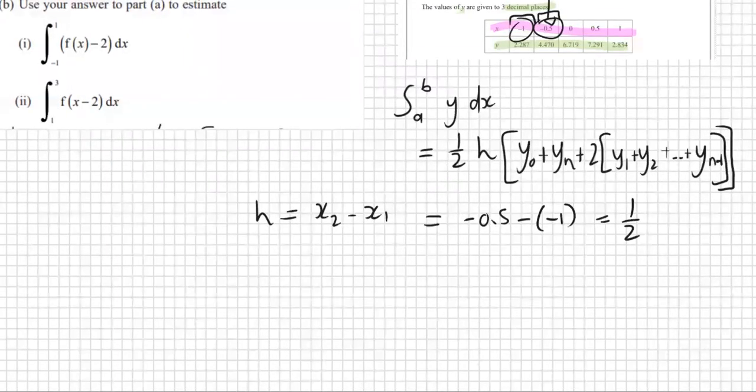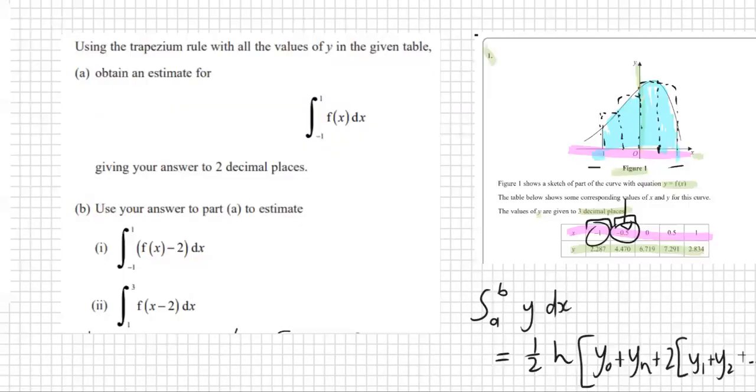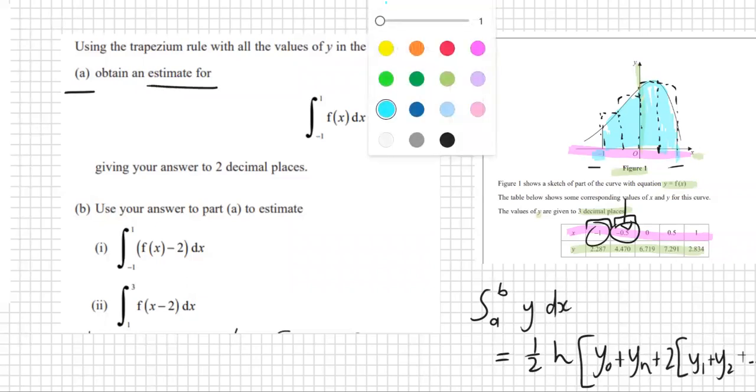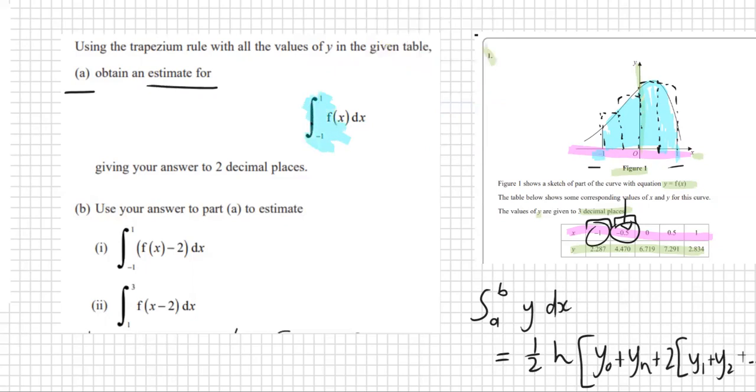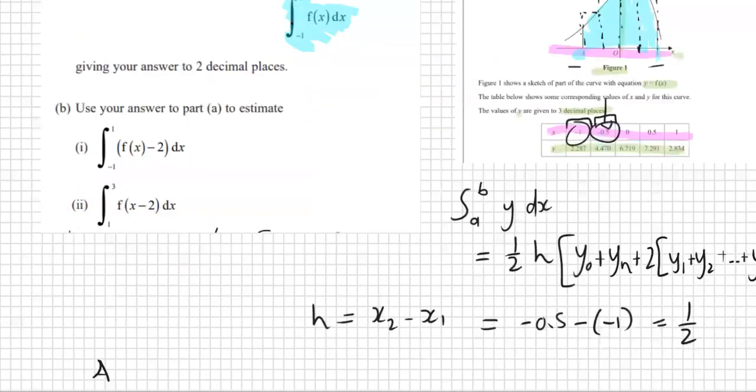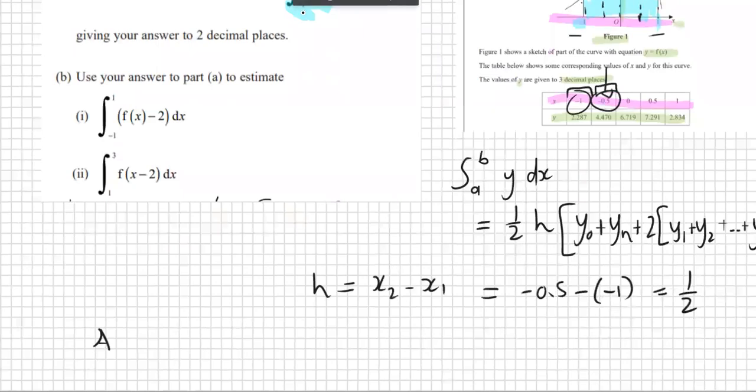So let's sub in all our values. So the area that we're working with, this is number a. The a is estimate for this integral between minus 1 and 1, that's the one we're doing. We want to know the area of under our curve between negative 1 and 1. So area using the trapezium rule.